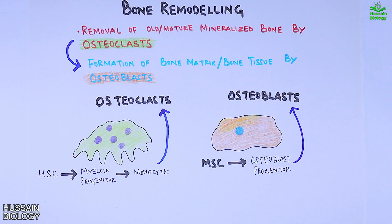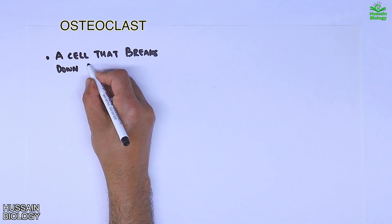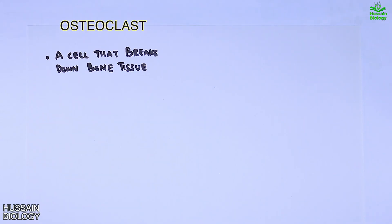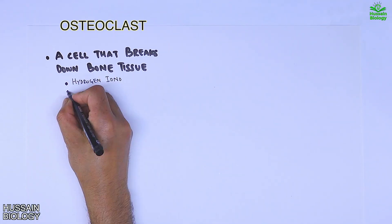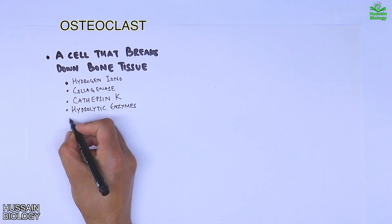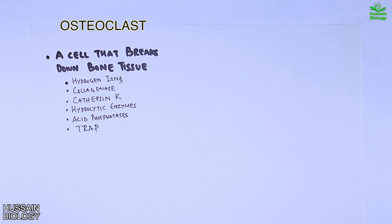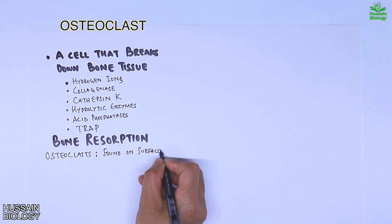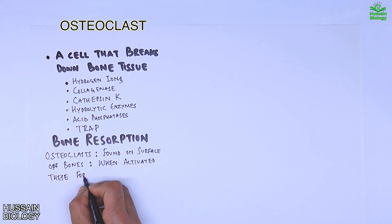Now let's see what these cells secrete to initiate bone remodeling. The osteoclast breaks down bone tissue by secreting different enzymes and molecules, including hydrogen ions, collagenase, cathepsin K, hydrolytic enzymes, acid phosphatase, and many other enzymes to drive the bone resorption process. These osteoclasts are found on the bone surface.